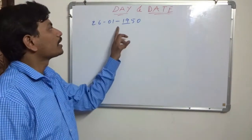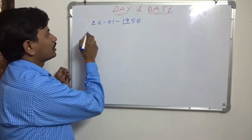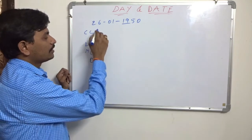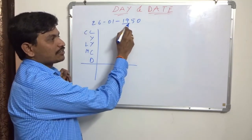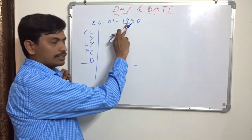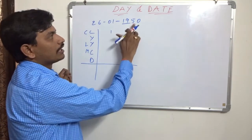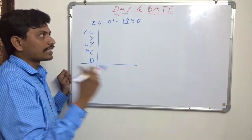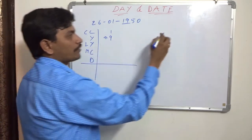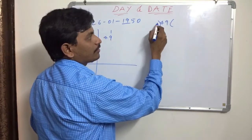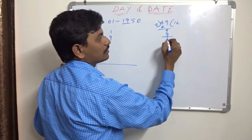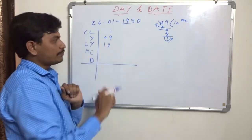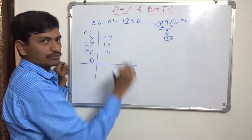Let's take another example: Republic Day, 26th January 1950. We calculate: century code, year, leap years, month code, date. Century code for 19th century: 19 ÷ 4 gives remainder 3, code is 1. For the year, 50th year is running so 49 years completed. Leap years: 49 ÷ 4, quotient is 12. January month code is 0.